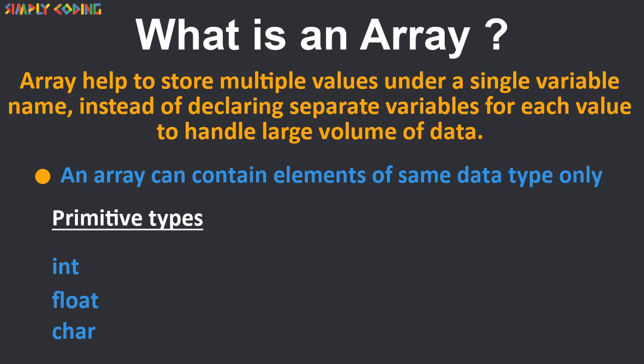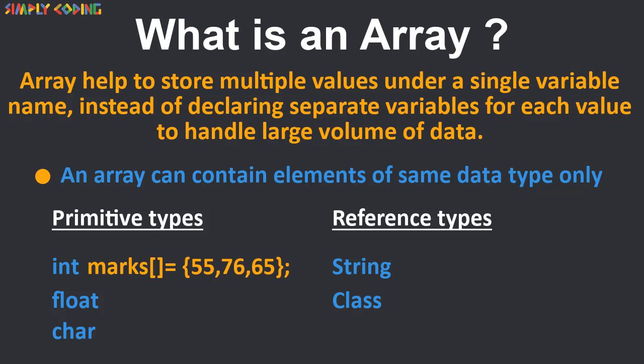So, you can have array of primitive types such as int, float, char or any reference data type like objects of classes such as string. For example, you can have an integer array of marks or string array of student name.